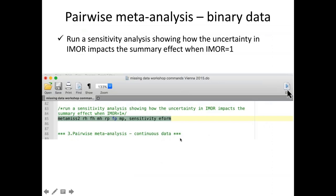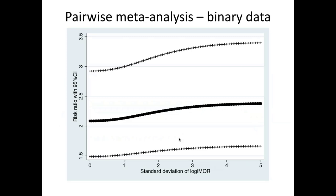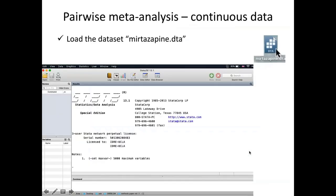We can run a sensitivity analysis over a range of standard deviations, producing a plot showing how results change. The standard deviation of the log IMOR ranges from 0 to 5, with IMP mean set to 0 (though this value can be changed). The plot displays the summary effects and the lower and upper confidence interval limits across all values.